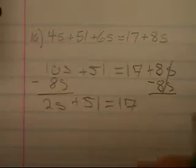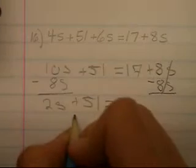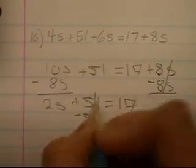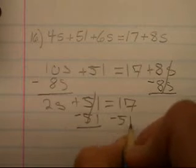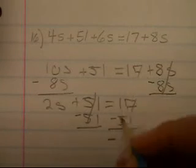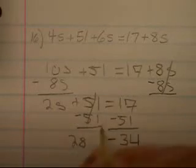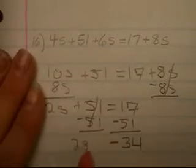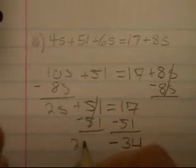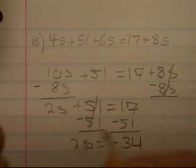You want to get the variable by itself. So you would subtract 51 from both sides, 51 from 17, and you would get negative 34. So 2s equals negative 34.